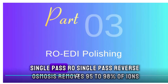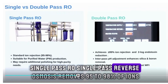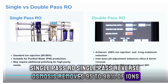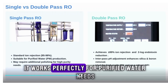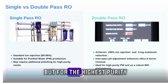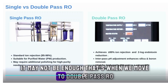Single-pass reverse osmosis removes 95–98% of ions. It works perfectly for purified water needs. But for the highest purity, it may not be enough. That's when we move to double-pass RO.